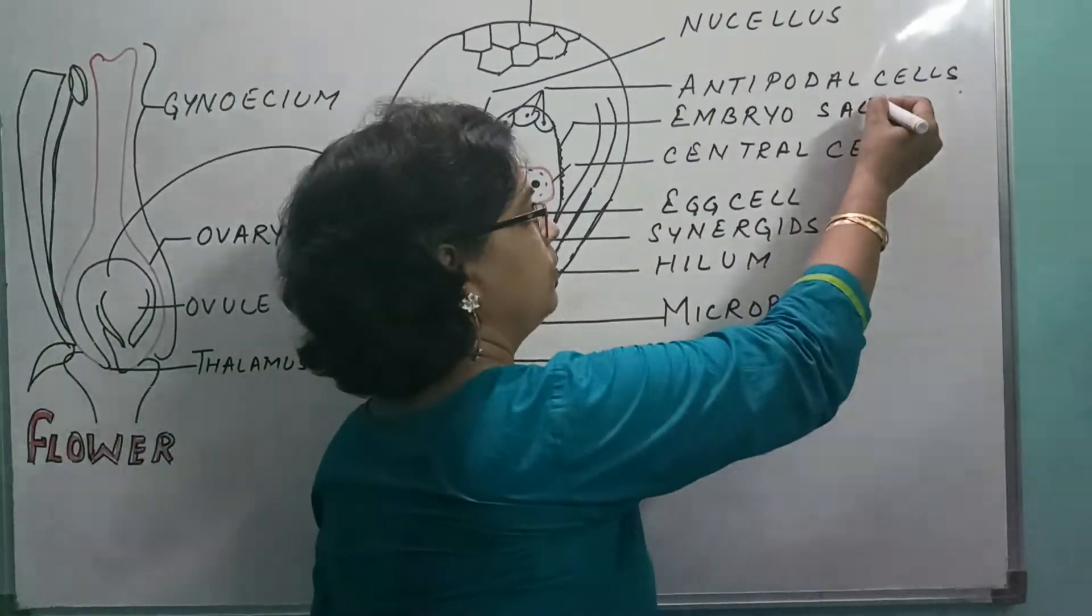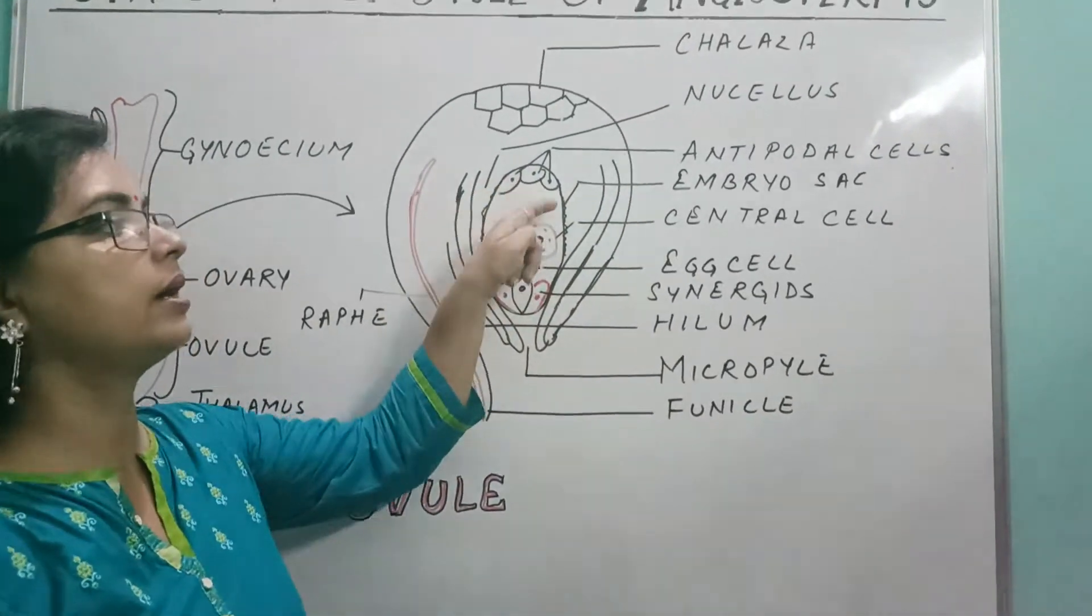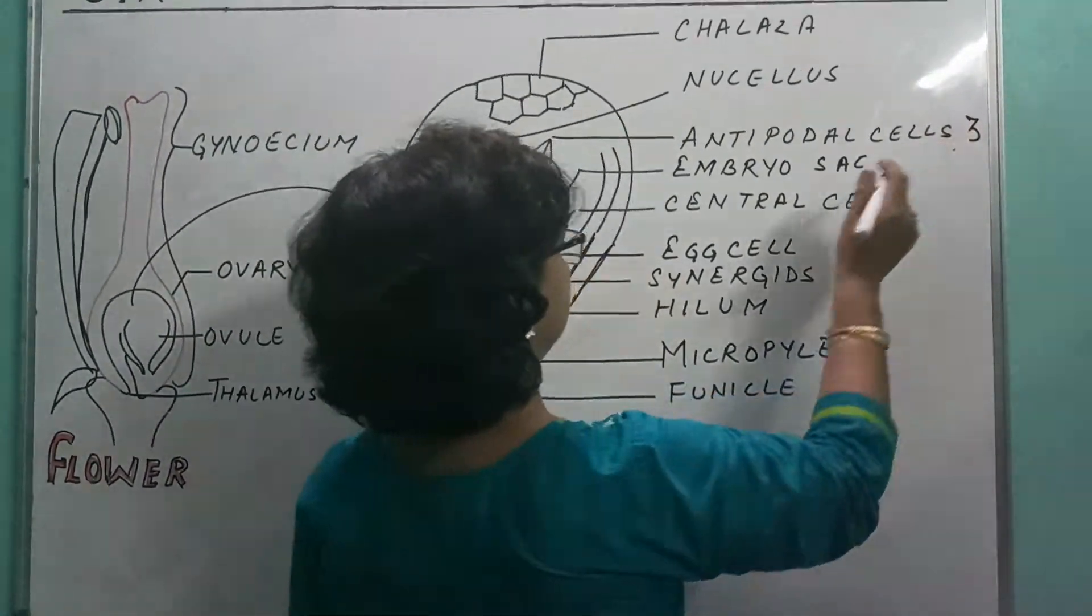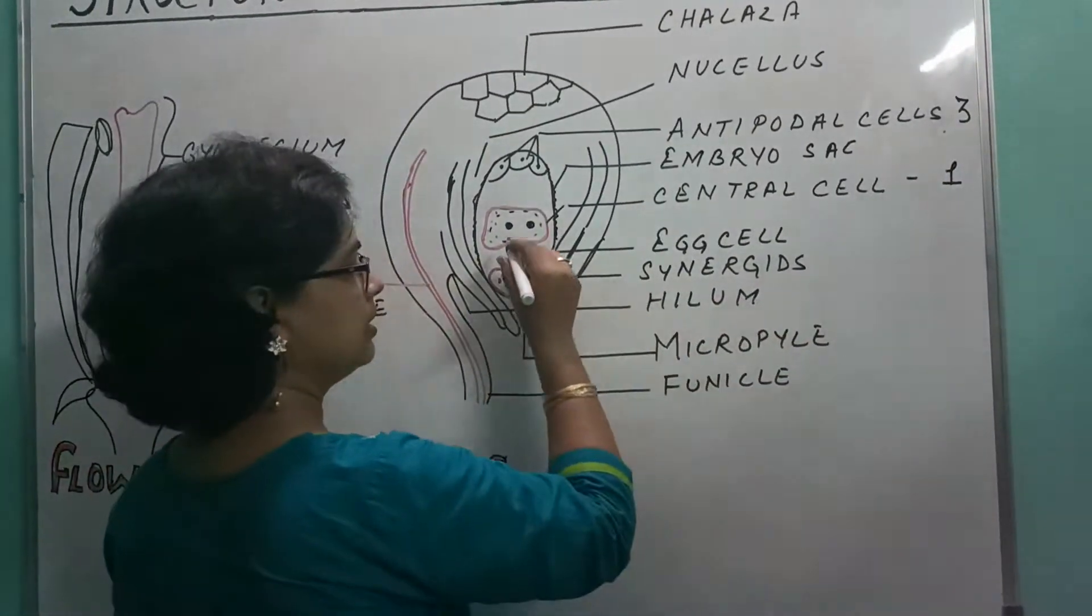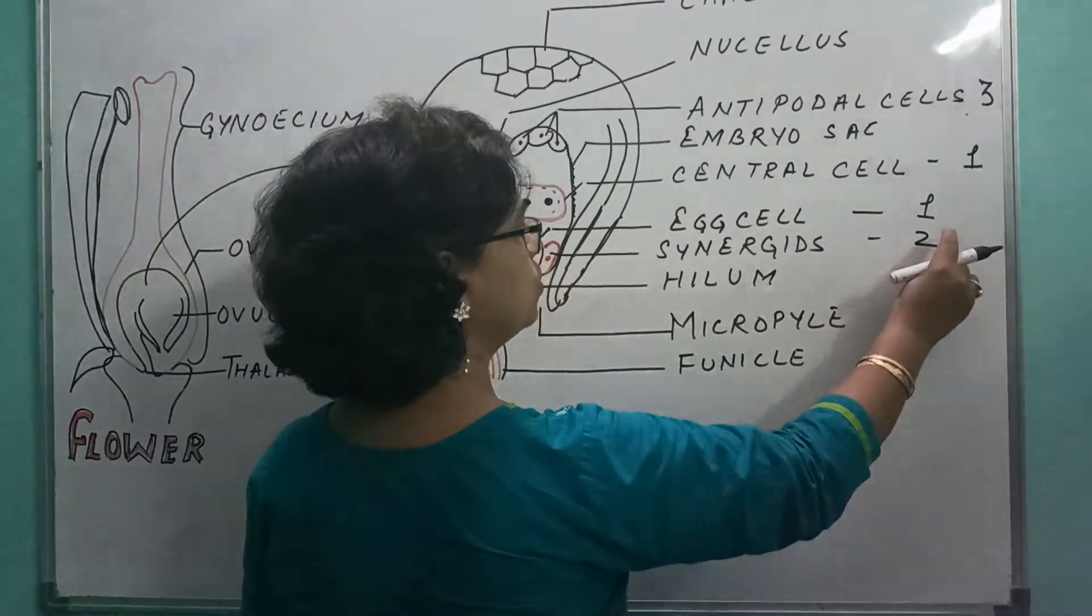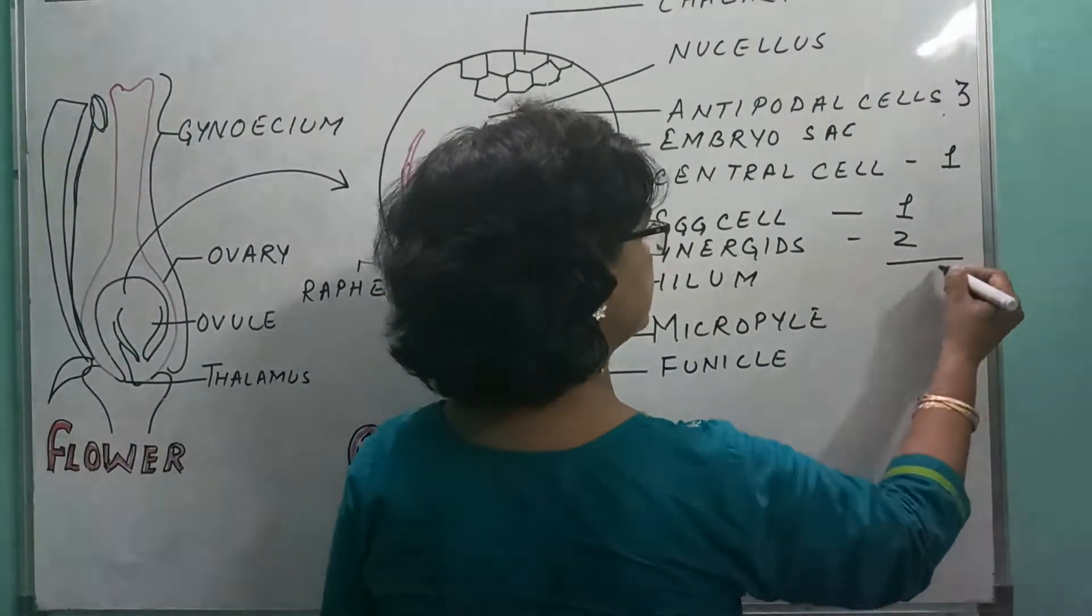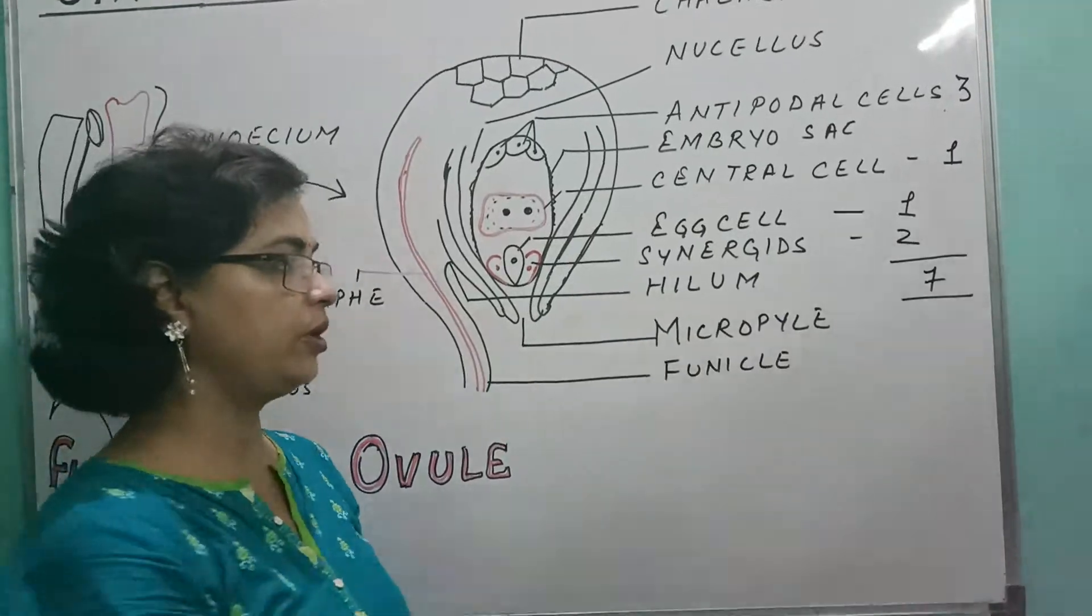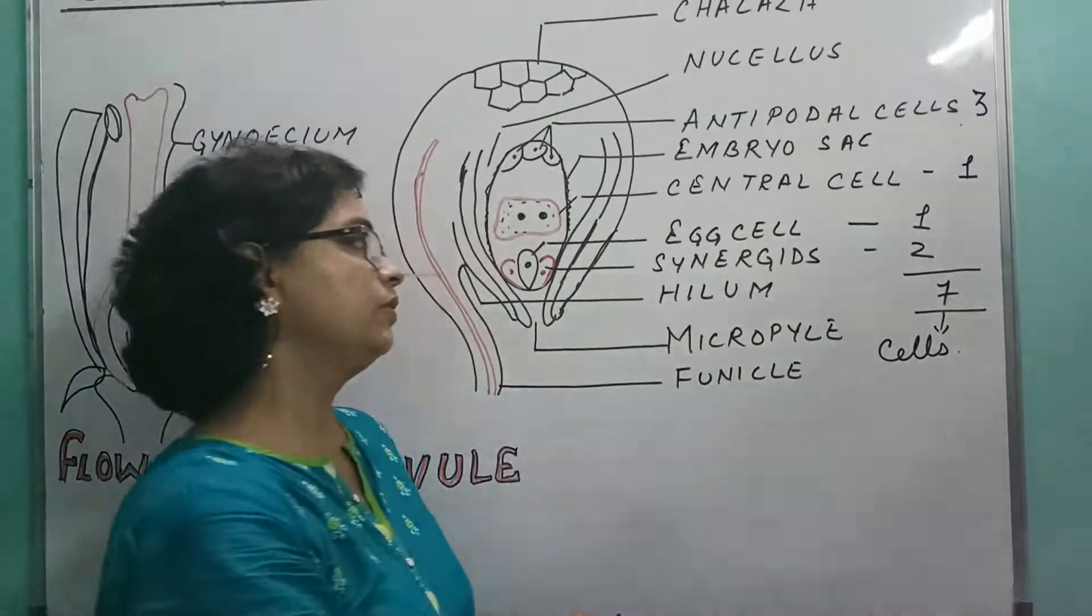Now I want to tell you a very important point, that all those cells which are there inside the embryo sac, that means 3 antipodals, they are 3 in number right in here. Then 1 central cell with 2 nuclei, no doubt. Egg cell, 1 in number. Synergids, 2 in number. 2 plus 1, 3 plus 1, 4 plus 3. So in totality it is 7. So inside the embryo sac there are 7 cells. Going to write down just below this one.